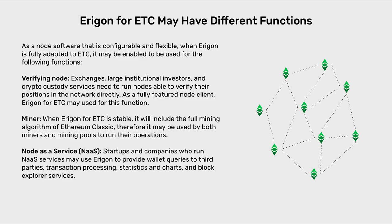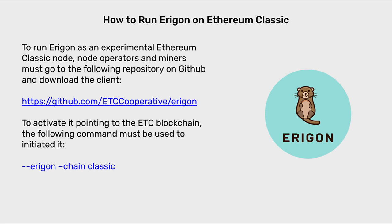Eragon for ETC may have different functions. As a node software that is configurable and flexible, when Eragon is fully adapted to ETC, it may be enabled for the following functions. Verifying node: exchanges, large institutional investors and crypto custody services need to run nodes able to verify their positions in the network directly. As a fully featured node client, Eragon for ETC may be used for this function. Miner: when Eragon for ETC is stable, it will include the full mining algorithm of Ethereum Classic and may be used by both miners and mining pools to run their operations. Node as a service (NaaS): startups and companies who run NaaS services may use Eragon to provide wallet queries to third parties, transaction processing, statistics and charts, and block explorer services.